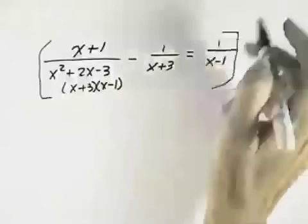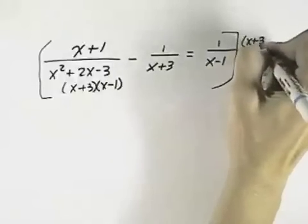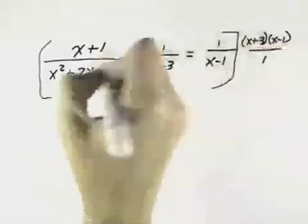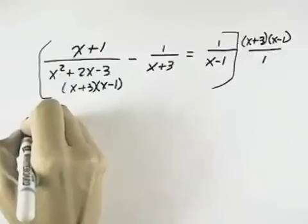So I'm going to multiply my entire equation by x plus 3 times x minus 1 over 1. And I can do that because I'm doing it to both sides of my equation.